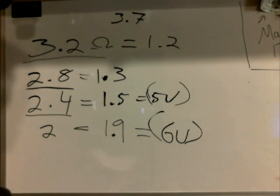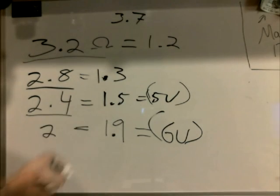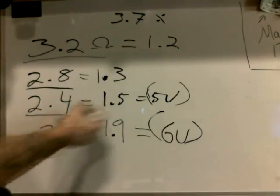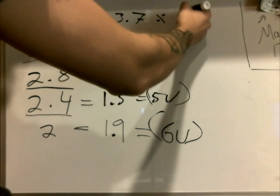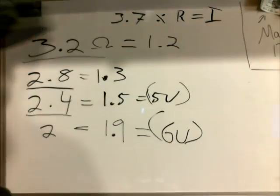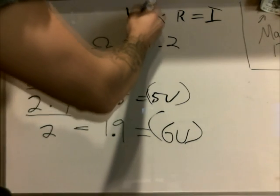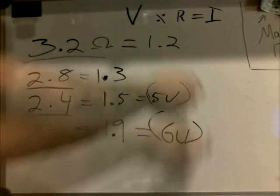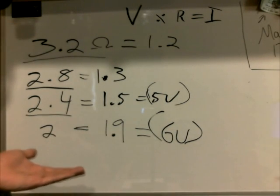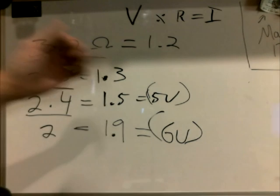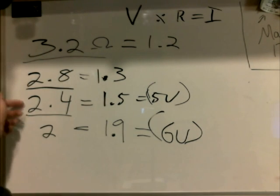To summarize: take your Voltage, divide by Resistance, and that equals Current. Voltage divided by Resistance equals Current. So you can achieve simulated 5-volt or 6-volt vaping at 3.7 volts simply by using lower resistance atomizers like 2.4 or 2.0 ohms.